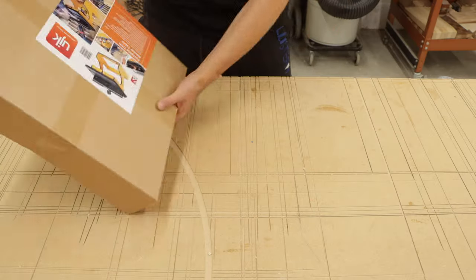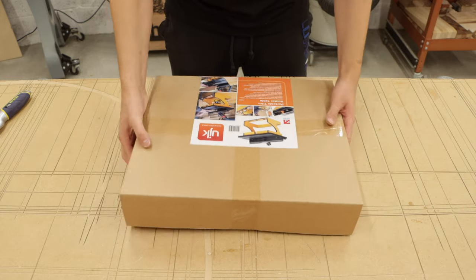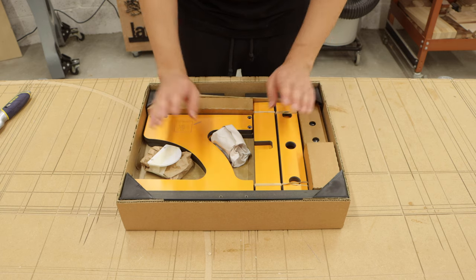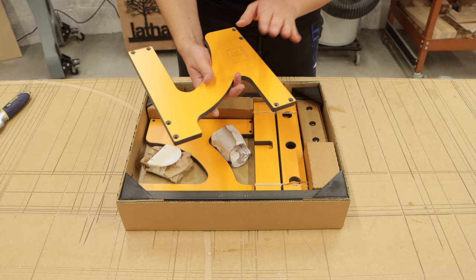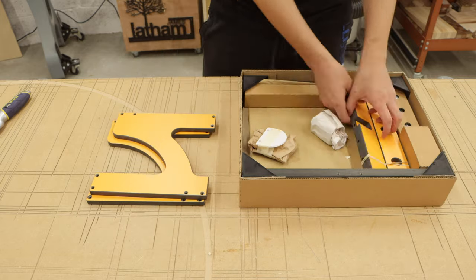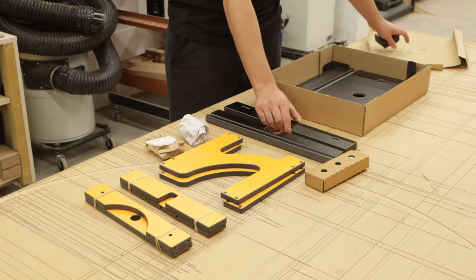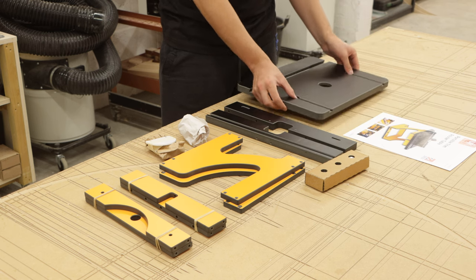I'm excited to get it set up, so let's open the box. This looks really nicely packaged. I can already tell that the components are high quality and machined perfectly. Let's get all the components out. This is one hefty table, especially for a miniature router table.